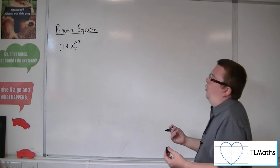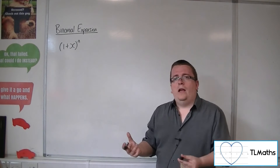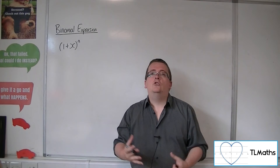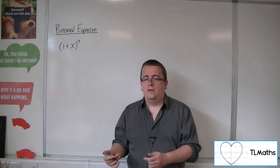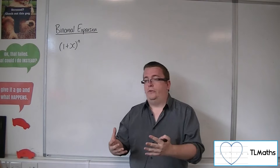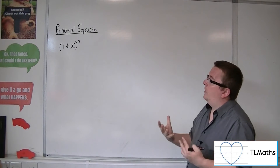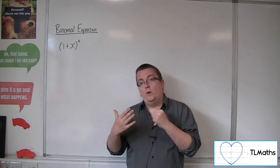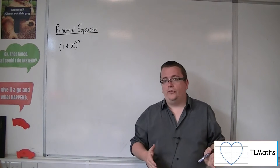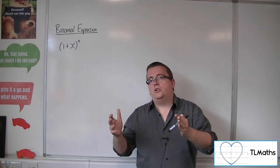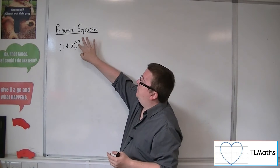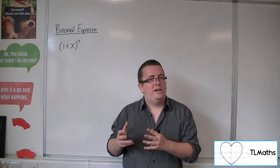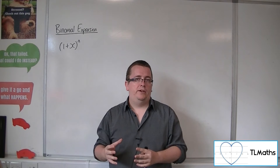What would it mean for this to be 1 plus x to the half? How could I expand that? We know that for whole numbers — 1 plus x to the 0, to the 1, to the 2, or to the 100 — we would have a finite number of terms. But when n is not a whole number, what you actually get is an infinite series of terms.